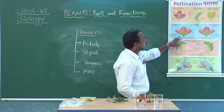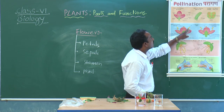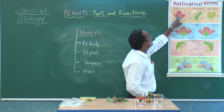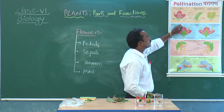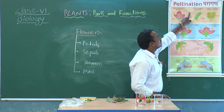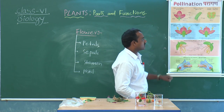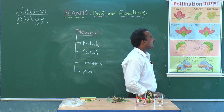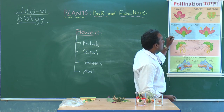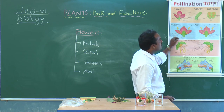The male reproductive parts of the flower are called as stamen. It consists of the anther, which produces pollen grains. The female reproductive part of the flower is called as pistil.